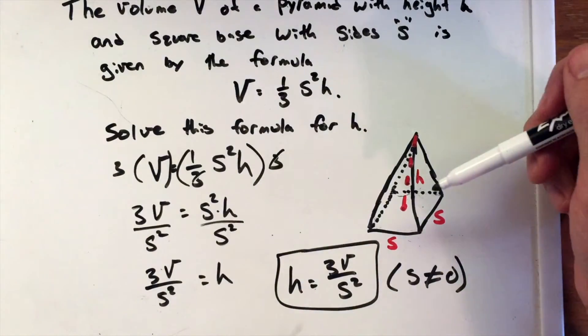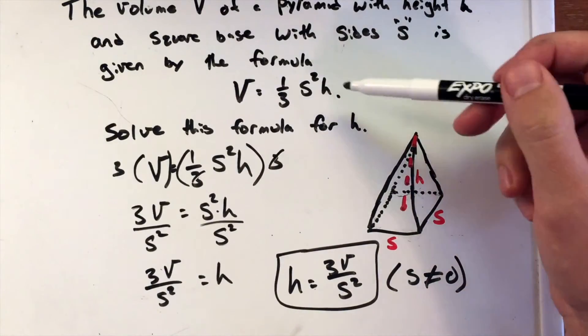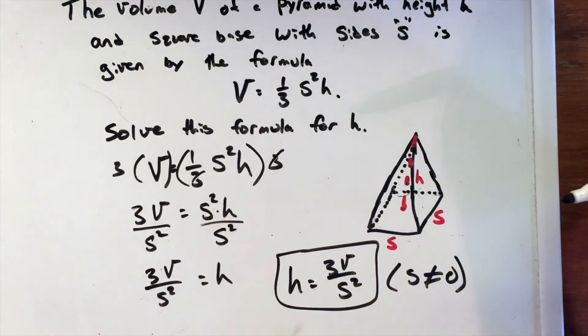We have the height in terms of volume and the length of the sides. It shows that they're related to each other - we can rearrange this equation that way.